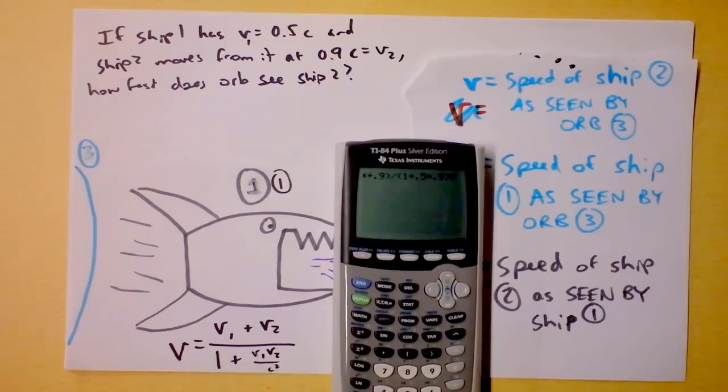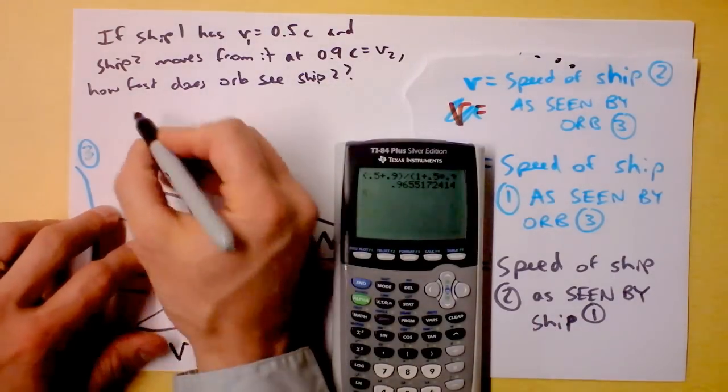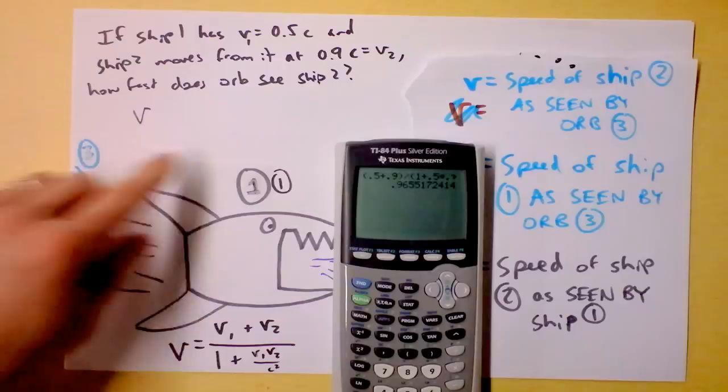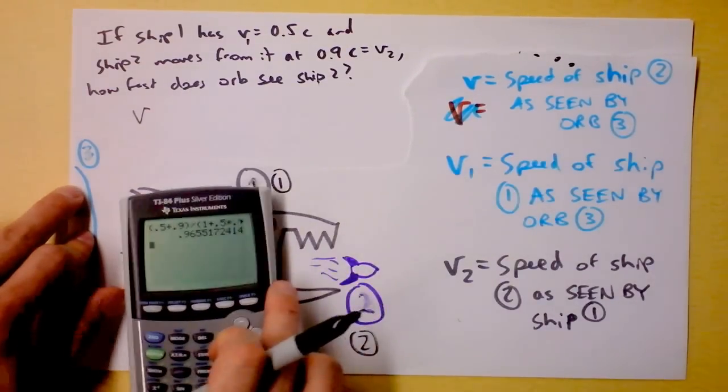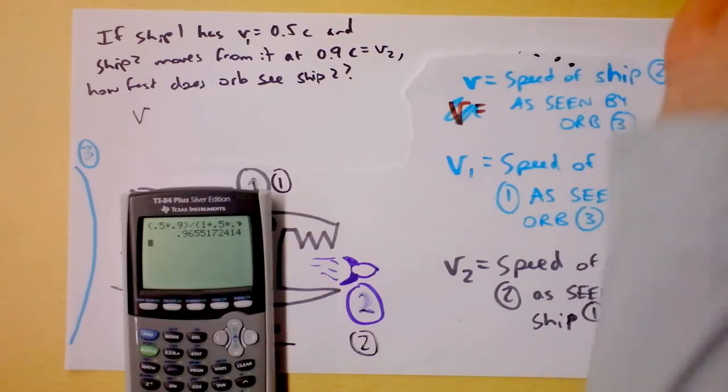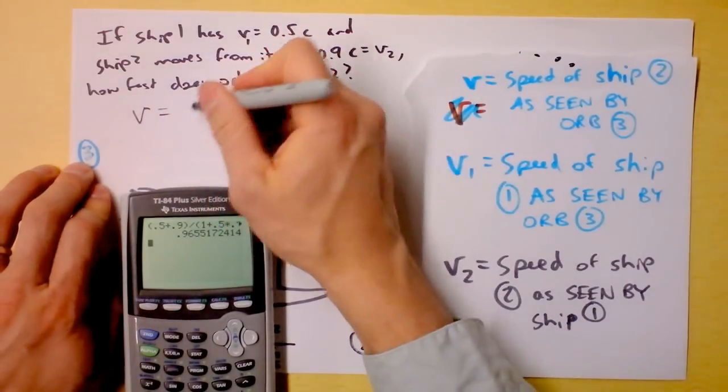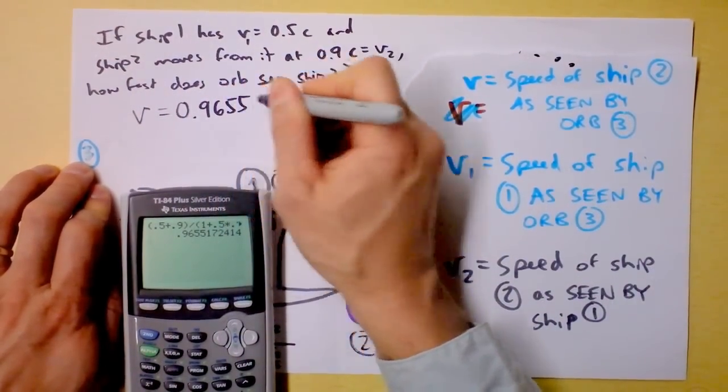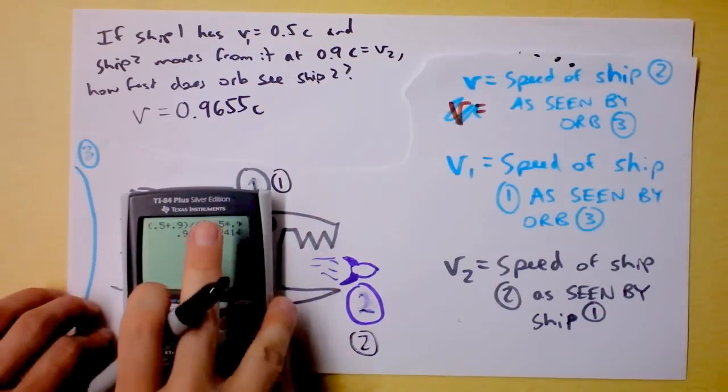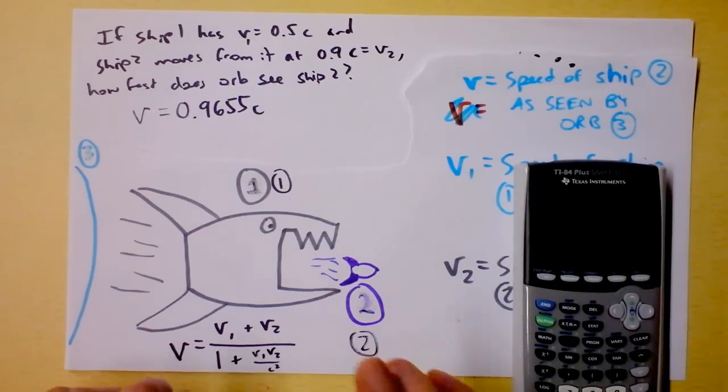Now the cool thing is the C's all canceled, and I can just hit enter, and then I can find that V, that's the speed of ship 2 as seen by the orb. And you should try this also. Do not trust my calculator work. I find V to be 0.9655 times the speed of light.